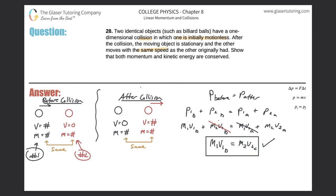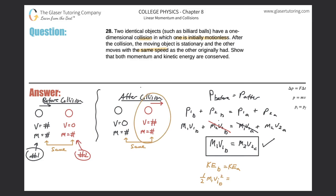Now for kinetic energy: the kinetic energy before the collision must equal the kinetic energy after. The object not moving in both cases has zero kinetic energy, so the only kinetic energy before is from the black ball. Therefore: one-half times the mass of object one times its velocity before squared equals one-half times the mass of object two times its velocity after squared.